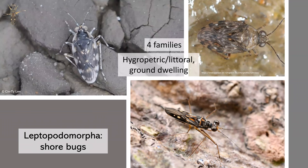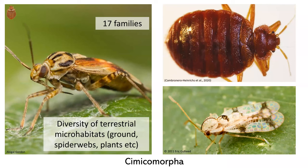There are four families of Leptopodomorphins, and they are hygropetric and littoral as well as ground-dwelling species. But I'm going to spend most of my talk focused on the two largest infraorders of Heteroptera: Cimicomorpha and Pentatomomorpha.